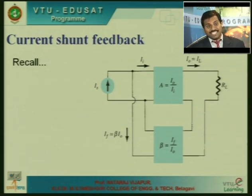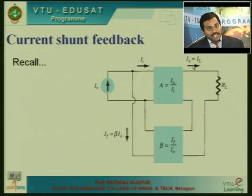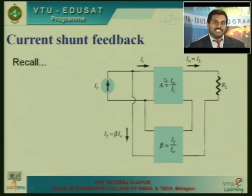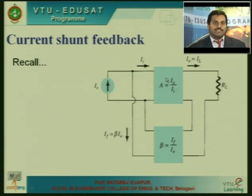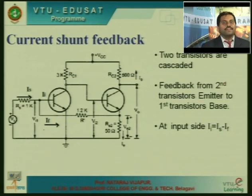The objective here is to control the load current. If the load current increases, the feedback current which is tapped should also increase, so that the input current to the amplifier decreases and the output is brought back to its original value. If there are any changes in the output, accordingly the feedback network generates a correction factor. That is the essence of feedback networks.